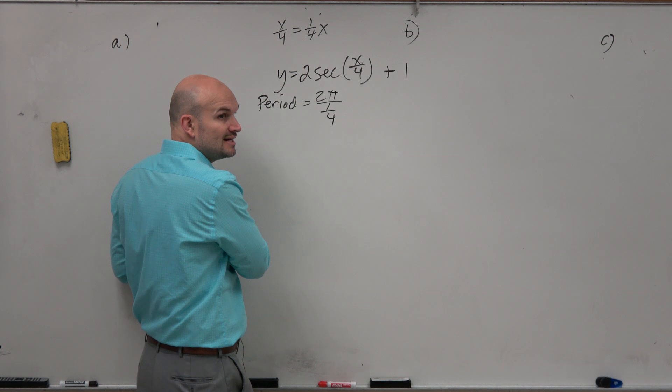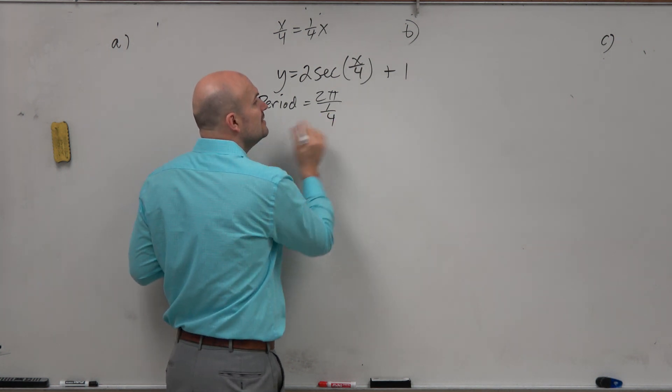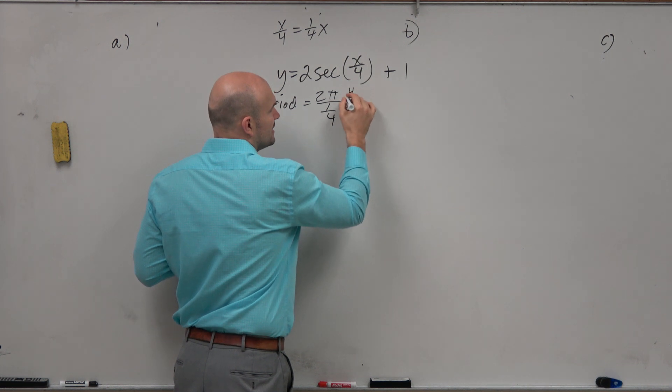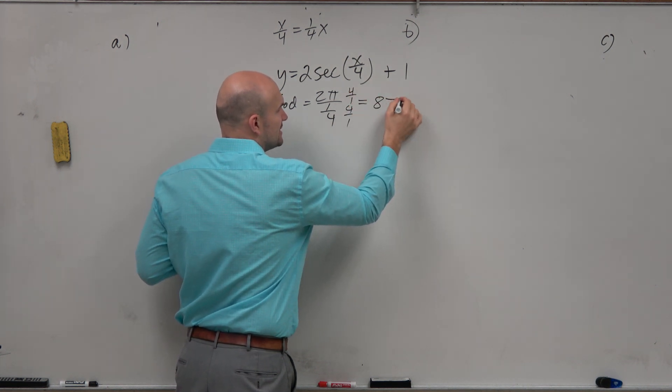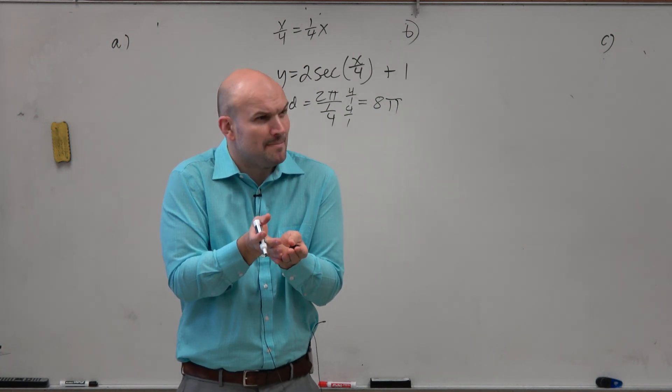And then, not the first time I've said it, not going to be the last, whenever you're dividing by a fraction, that's the same thing as multiplying by the reciprocal, right? So you could write it like this, or once we get really good at it, we can just say that's 8 pi. So again, think about this.